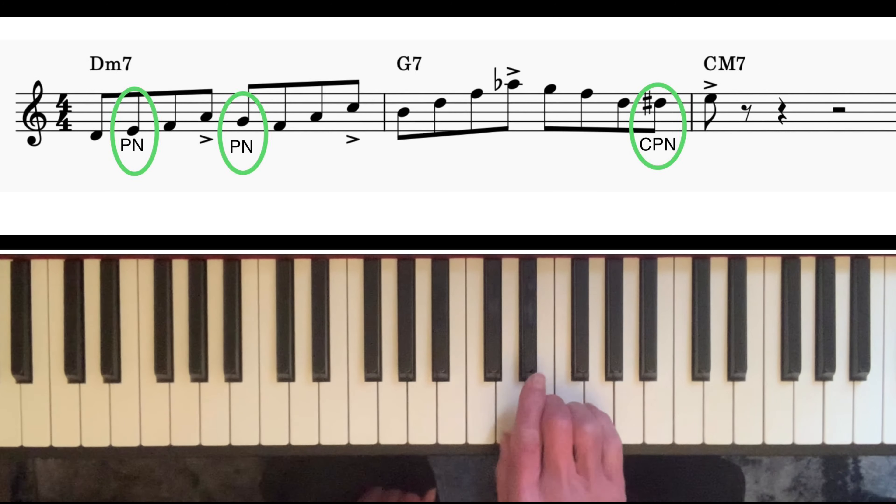Chromatic means that it's borrowed from another key, so the note D sharp is not in the key of C, and it passes in between the D, the fifth of G7, and E, the third of C major seven. So that pattern is used extensively in jazz and it's one that you really need to know in all keys.